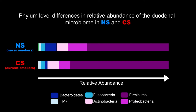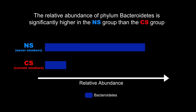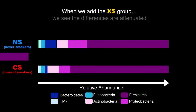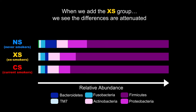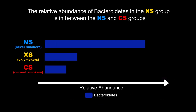The relative abundance of phylum Bacteroidetes is significantly higher in the never-smoker (NS) group than the current smoker (CS) group. When we add the ex-smoker group, the relative abundance of Bacteroidetes in the ex-smoker group is in between the NS and CS groups.